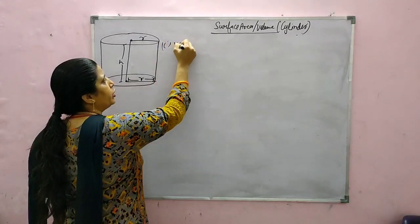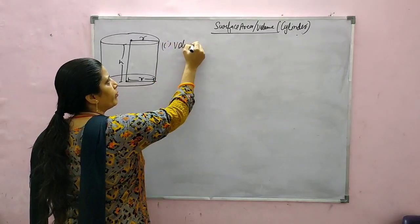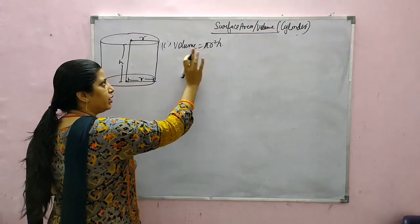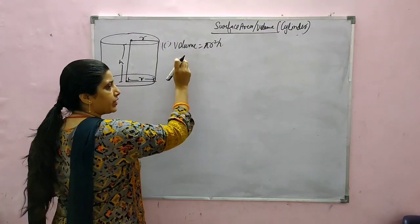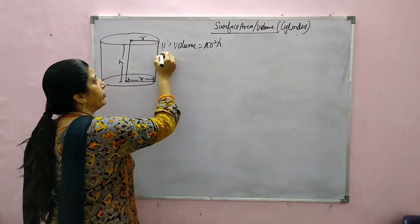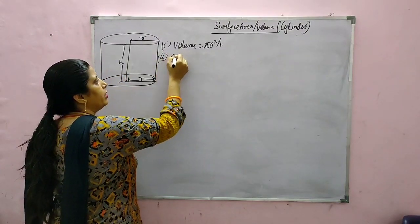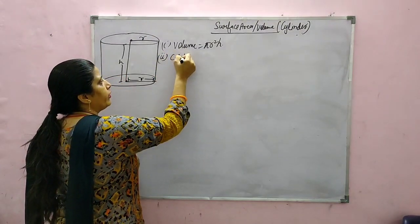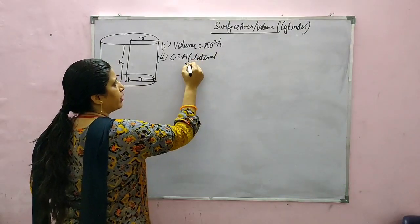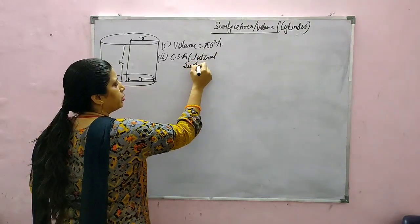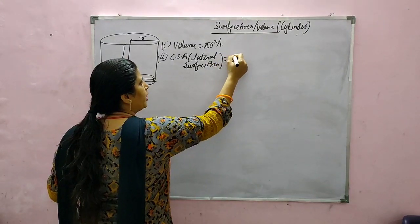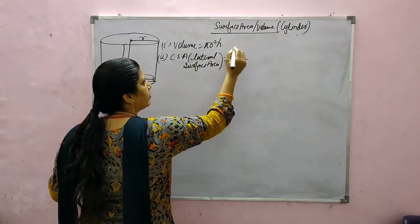First, the volume formula is Pi R square H, where pi is a constant with value either 22 by 7 or 3.14. Then, curved surface area or lateral surface area — both mean the same — which is 2 pi R H.